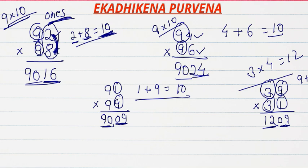Similarly, if we want to multiply 39 and 31, the sum of the digits at the one place is 9 plus 1 which is 10, and the remaining digits are the same, that is 3 and 3. So 9 times 1 is 9 — but always remember that we need to make it 2 digits, so we write 09. Then 3 times 4 is 12. So 1209 is the product of 39 and 31.